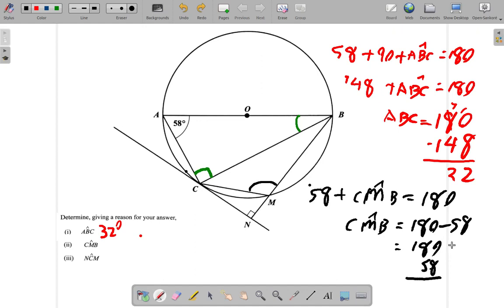180 minus 58, you can't use a calculator. If you drop 50 from 180 you get 130, and now minus 8, 130 minus 8, that is 122. So it seems like this is 122 degrees. So CMB is 122 degrees.